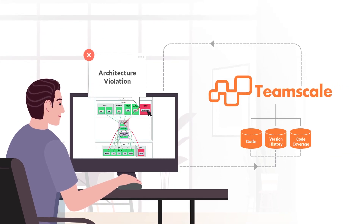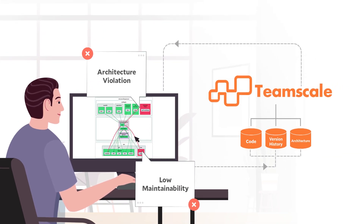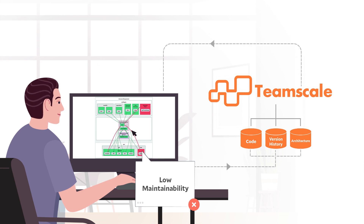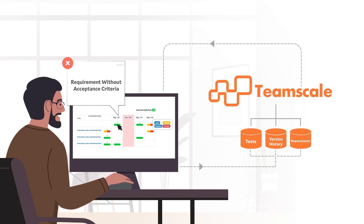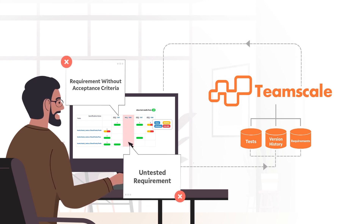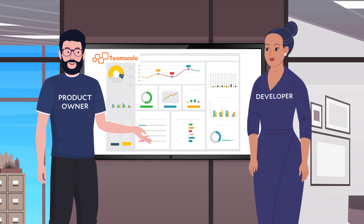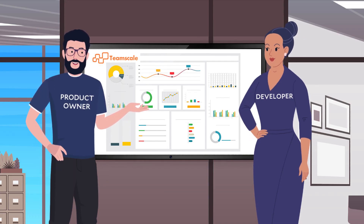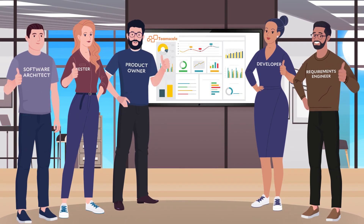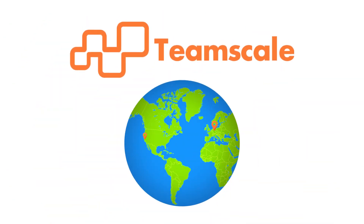Architects are able to see architecture violations as soon as they occur. Quality metrics point out components where issues may arise. Requirements engineers receive feedback on deficits in requirements specifications, including untested requirements. TeamScale gives the entire team an overview of their software quality at every point in time, ready for the release.